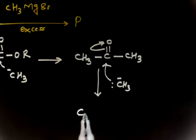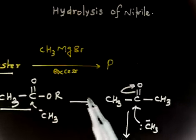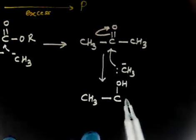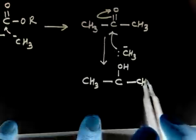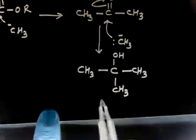And if you do hydrolysis in the next step, so acidification - acidification is not given in this problem, but you assume that the final product is after acidification. So you will have OH, CH3, CH3. So basically you are getting a tertiary alcohol.